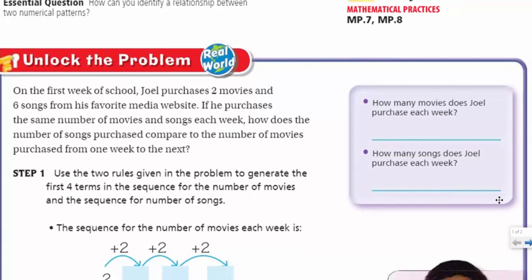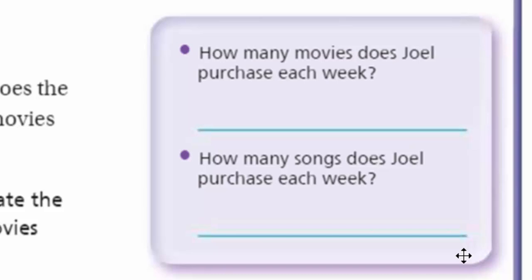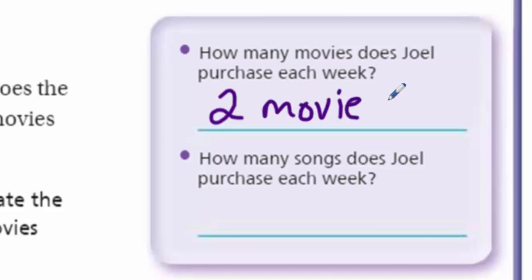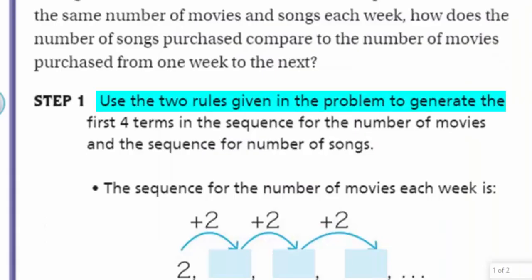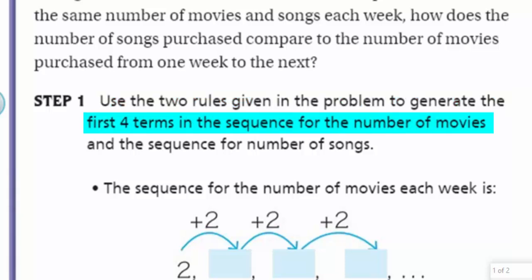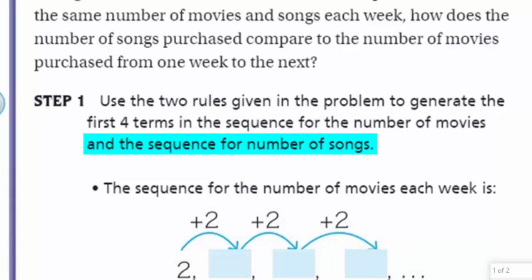What should we do next? We have the purple box. Step one. How many movies does Joel purchase each week? That's information from the problem — he purchases two movies. Two of them. And how many songs does Joel purchase each week? Six songs. Step one says: use the two rules given in the problem to generate the first four terms in the sequence for the number of movies and the sequence for the number of songs.